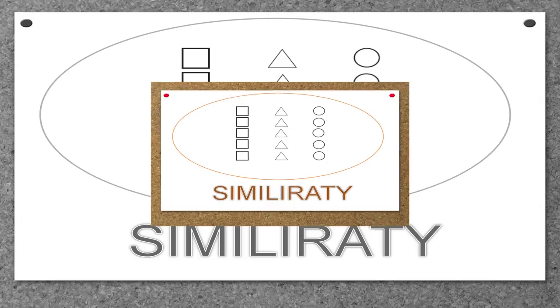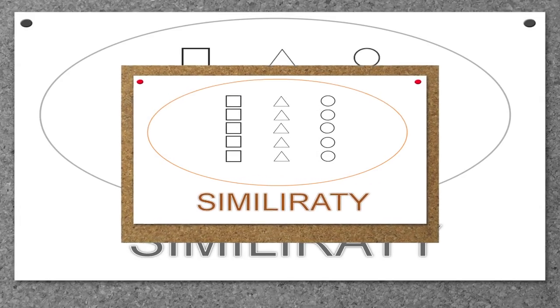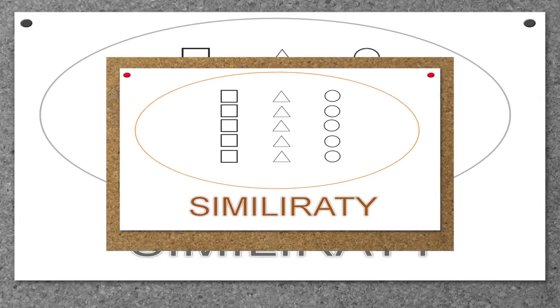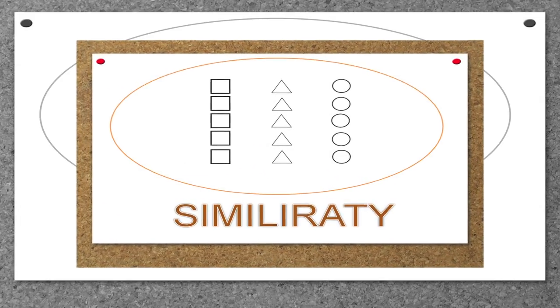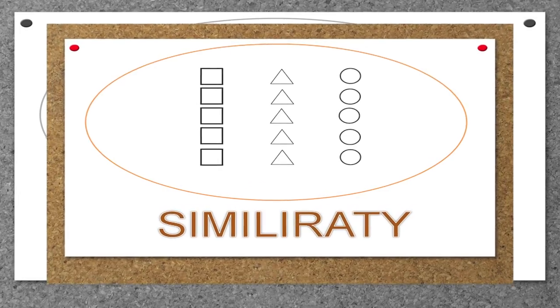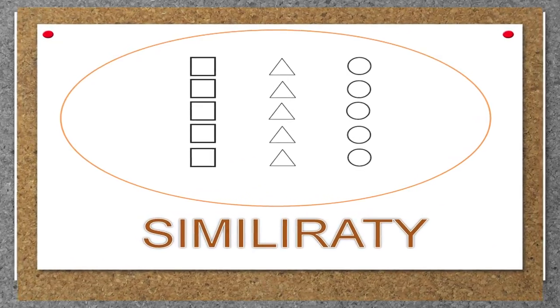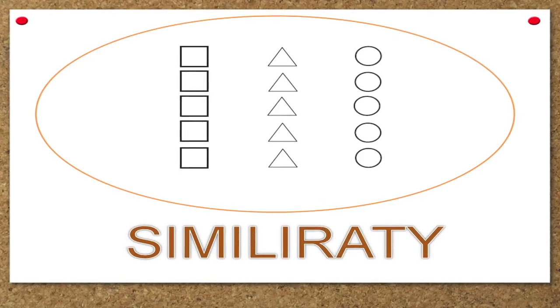The next law is the law of similarity. Other things being equal, elements which are similar in structure or have common characteristics will be grouped together. For example, in the following figure five squares, five triangles, and five circles in columns are grouped together — meaning you have a tendency to group similar-looking objects together.